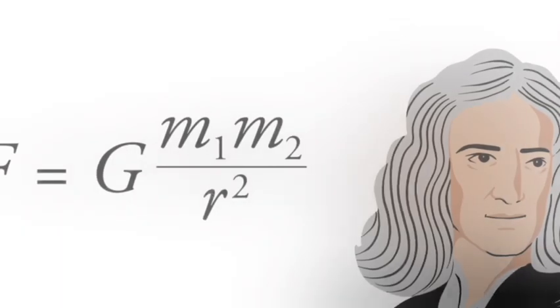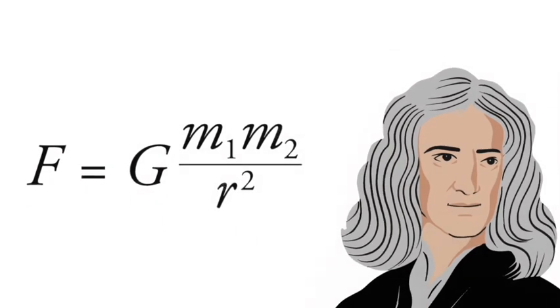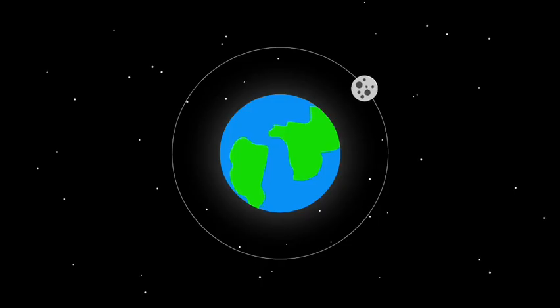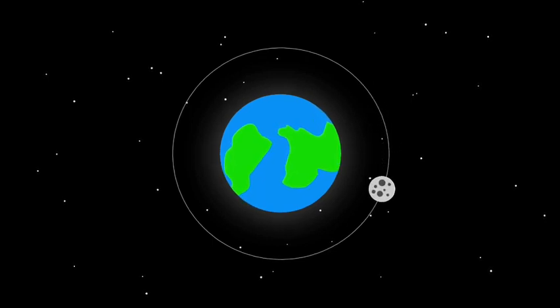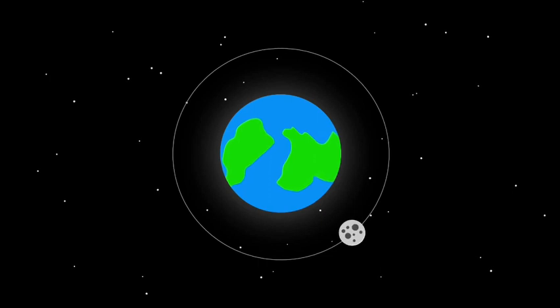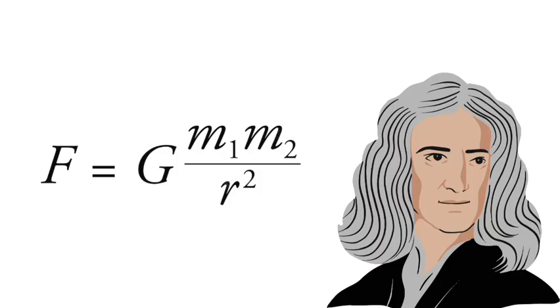For most applications, gravity is well approximated by Newton's law of universal gravitation, which describes gravity as a force causing any two bodies to be attracted toward each other with magnitude proportional to the product of their masses and inversely proportional to the square of the distance between them.